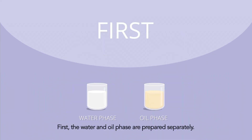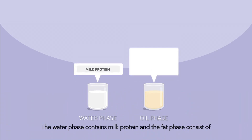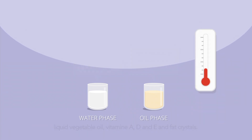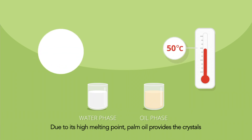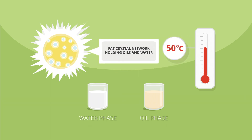First, the water and oil phase are prepared separately. The water phase contains milk protein, and the fat phase consists of liquid vegetable oil, vitamin A, D and E, and fat crystals. Due to its high melting point, palm oil provides the crystals in which the other liquid oils and water droplets are held.